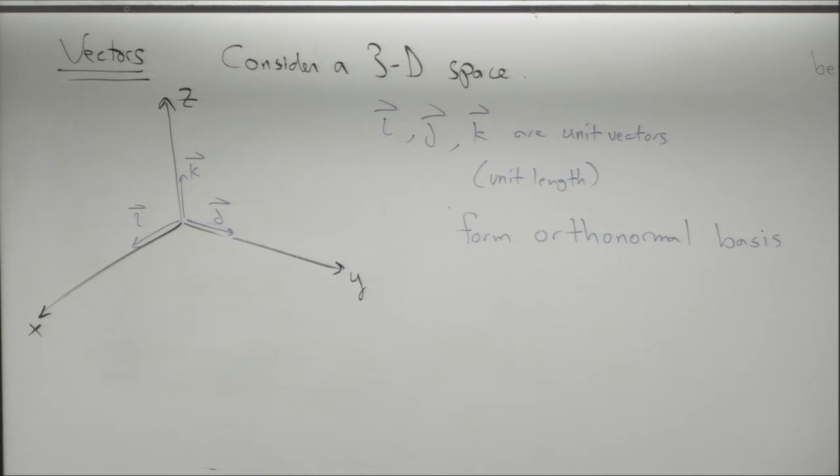If you were on the surface of a sphere like the Earth — standing in a big flat field — it would look locally like a Euclidean space because it's locally flat. But if you zoomed way out, you'd see the surface is actually curved and not Euclidean.